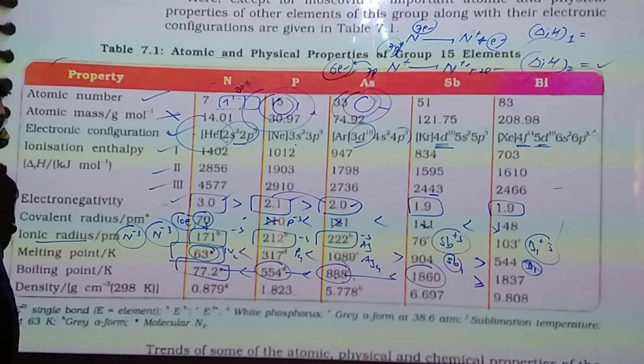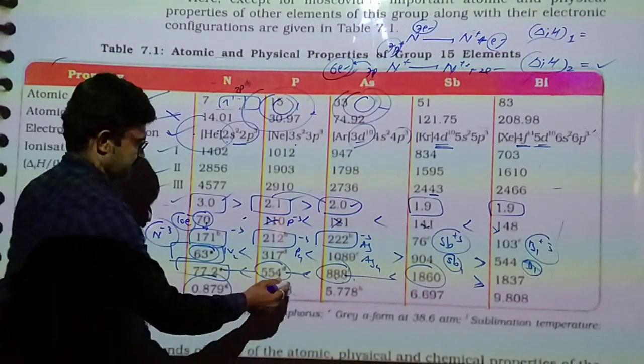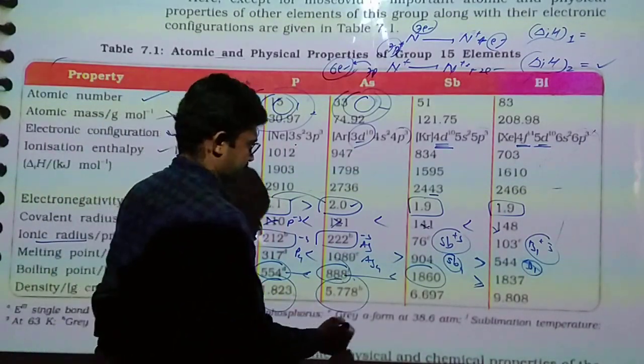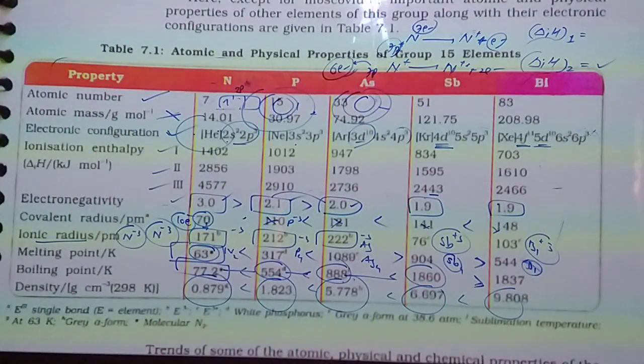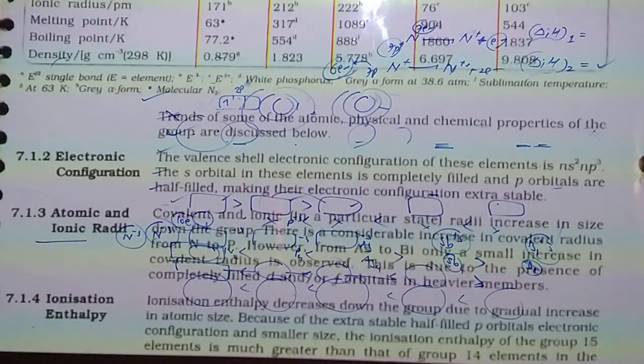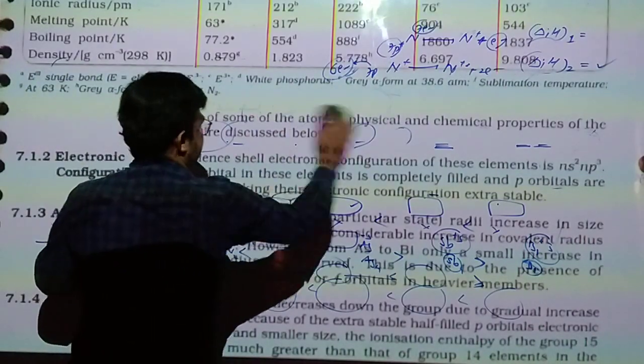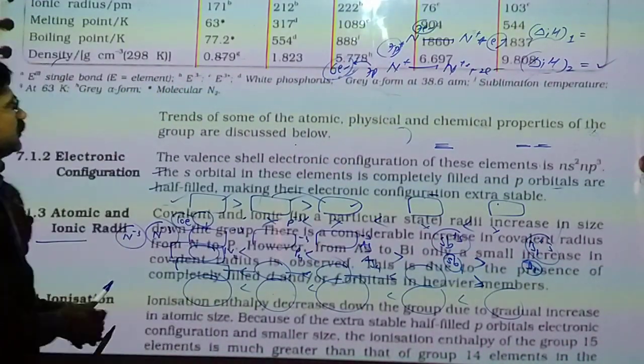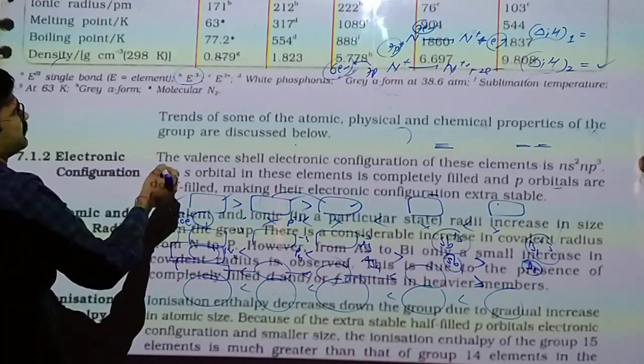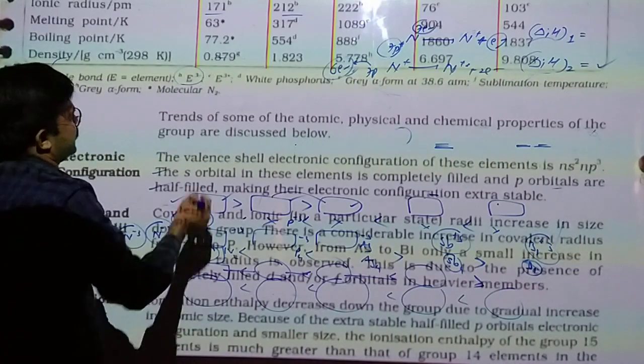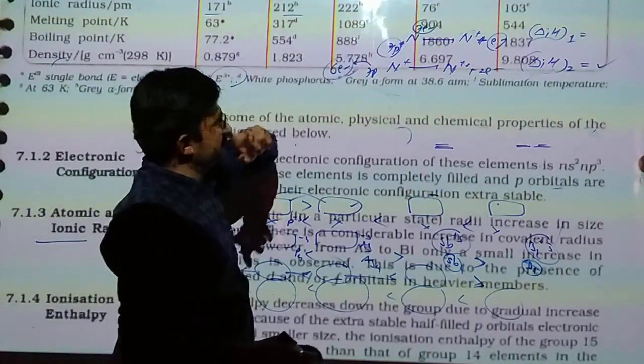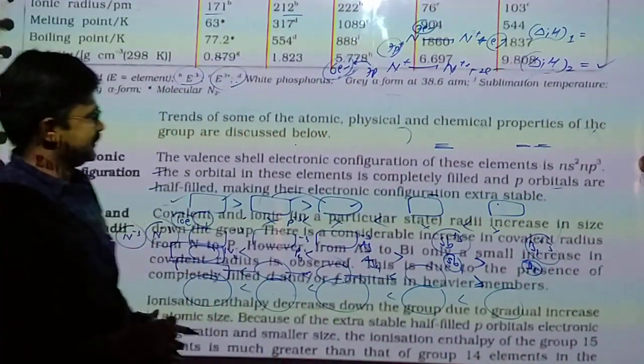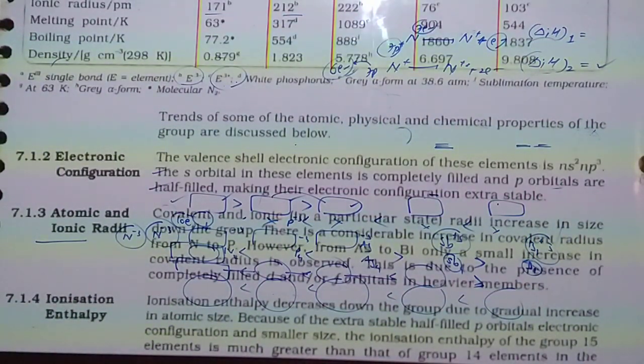Density in gram per centimeter cube: 0.879, 1.82, 5.77. Density continuously increases. This is our trend, the trend of some atomic, physical and chemical properties. Ionic radius for negative ion, positive ion is given. Now next we will discuss in our next lecture. Till then, bye bye.